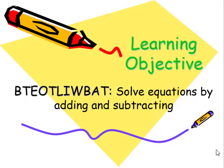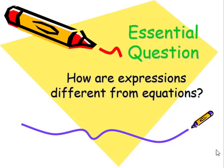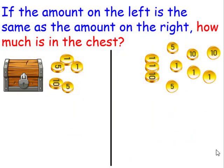By the end of this lesson, I'll be able to solve equations by adding and subtracting. Our essential question is: how are expressions different from equations? If the amount on the left is the same as the amount on the right, how much is in the chest?